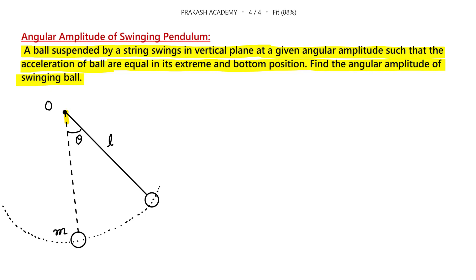Consider a swinging pendulum. The lowest position is point A, and after swinging to a certain point, it reaches the extreme position. Let theta be the angular amplitude. The length of the string is L, the mass of the ball is M, and it is suspended through point O. The problem also states that the angular accelerations of the ball are equal at its extreme and bottom positions.